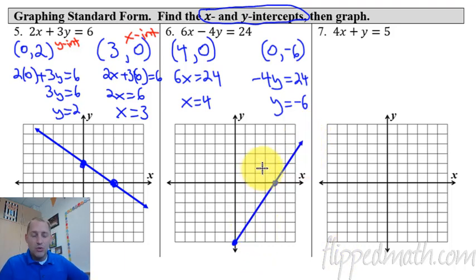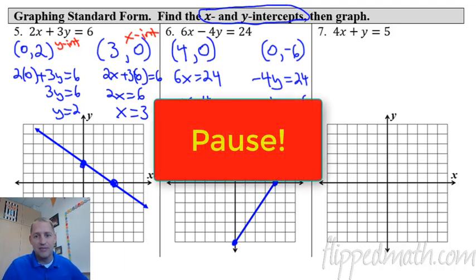Okay. Number 7. Try this one on your own. Find the x and y-intercepts. The order doesn't really matter. Just make sure you're distinguishing and graphing them correctly. And then after you have that, push play. We'll see if you get the same answer as me.